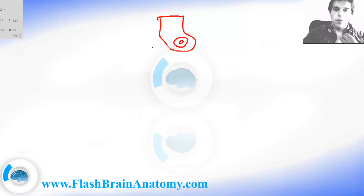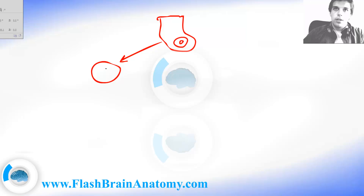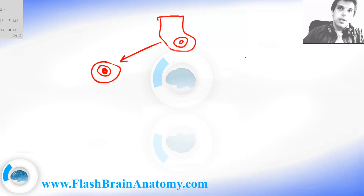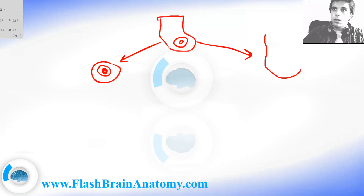Out of the neuroepithelial cells, we have the neuroblasts, which develop and are pretty much round with the nucleus in the center. We also have the ependymal cells, which look something like this.